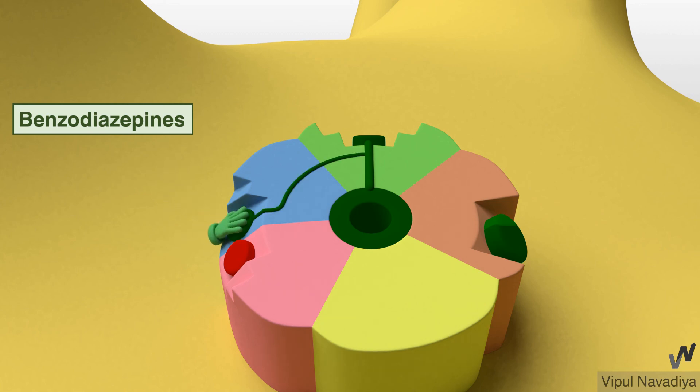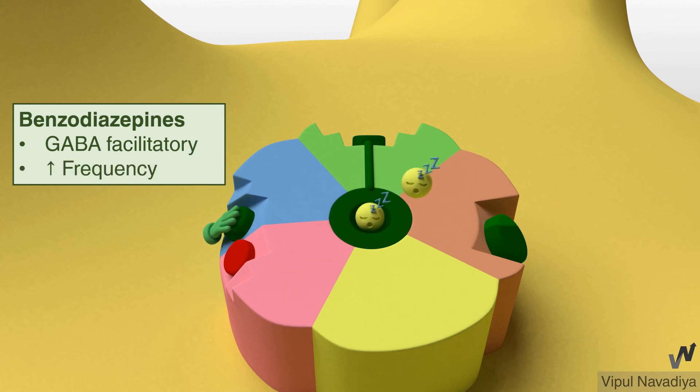They potentiate action of GABA so calm the neuron down even more. This is called GABA facilitatory action. One peculiar thing to remember here is they increase the frequency of GABA channel opening.